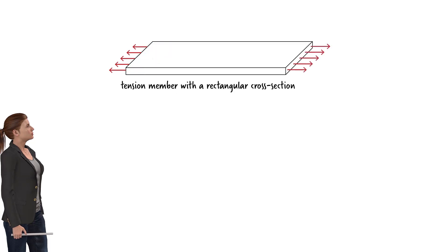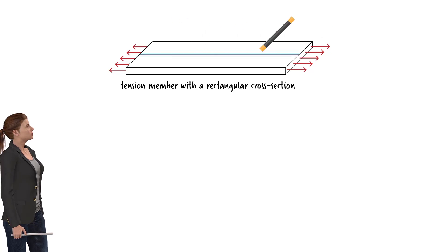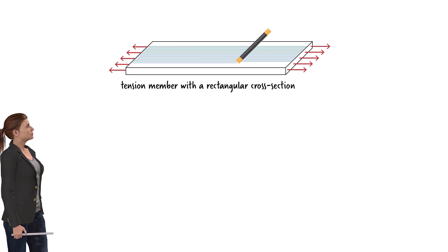Put differently, we can say that the axial stress in the member flows from one end of the member to its other end along straight lines, like this.